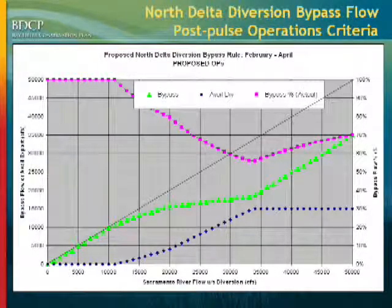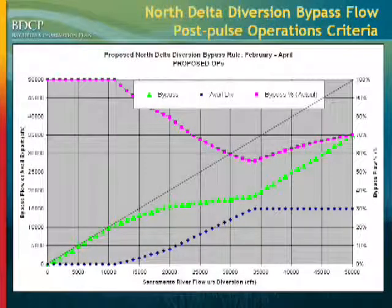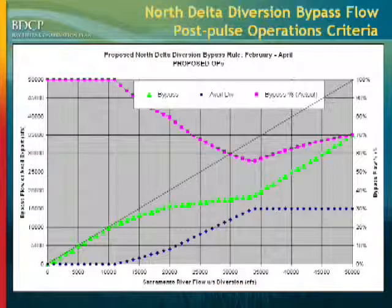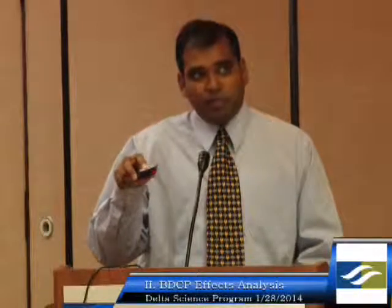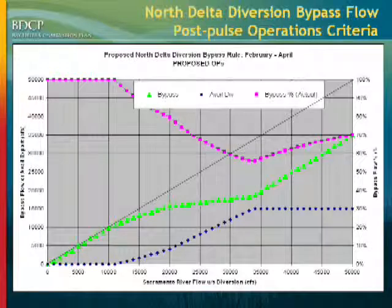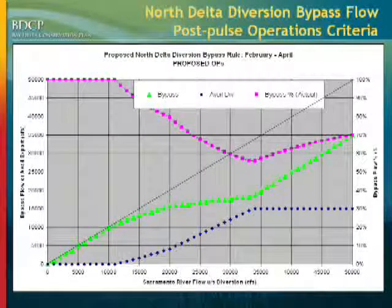The green triangles represent the amount of actual bypass flows under the proposed bypass flow requirements. You can see that up to about 11,000 to 12,000 CFS, the bypass flow is the same as the flow upstream of the intakes, and from there on there is a divergence from that one-to-one line. The blue diamonds indicate the amount of diversion occurring at the intakes under the rules — even after 12,000 CFS, we are not allowed to divert the entire flow above that threshold; we only get a fraction of it. The magenta line shows the percentage of Sacramento River flow being bypassed — at 12,000 CFS, about 95% of the flow above that level is still being bypassed.